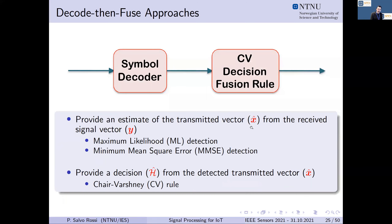The second family of approaches is the decode-then-fuse approach, in which the decision is made in two steps. First, from the received signal at the fusion center, we reconstruct the transmitted information at the sensors. Then, based on that sensed state information, we design a combining rule similar to a voting scheme. If we know each sensor's decision for the state, we can implement a voting scheme providing the final estimate for the source state.